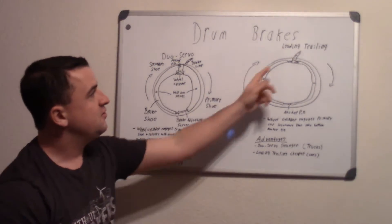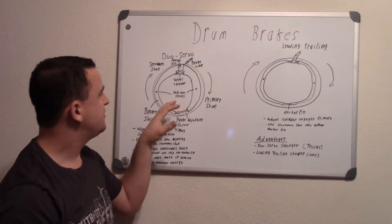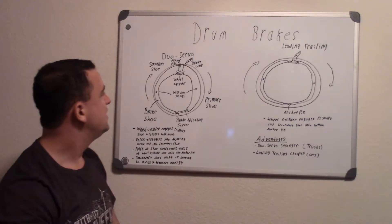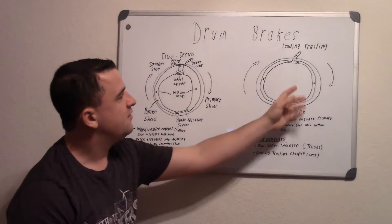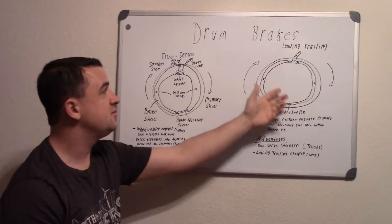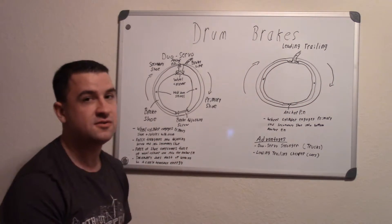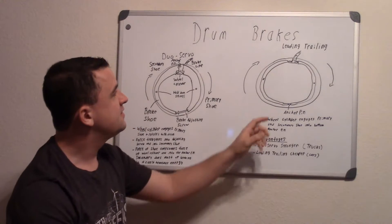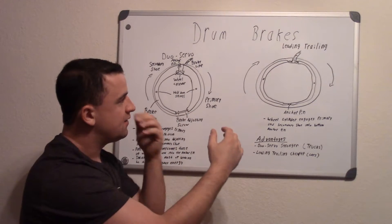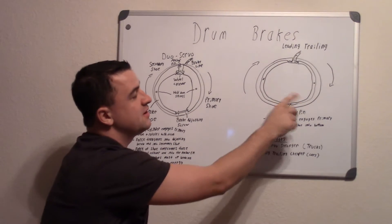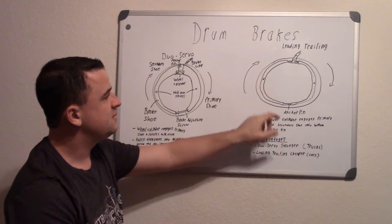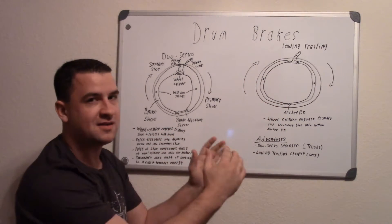Then over here you have leading trailing and these have a lot of similar parts. Like for example, these are the hold down springs. And again you have the leading shoe and the primary shoe, and the trailing one or the secondary shoe. In this, the wheel cylinder up there again engages it and the front shoe does most of the braking in this one. And the second shoe doesn't really do much of it. Down here you have an anchor pin that stops that.